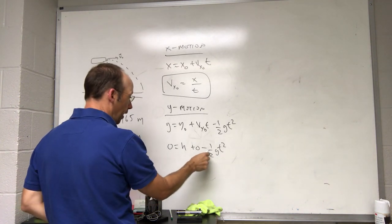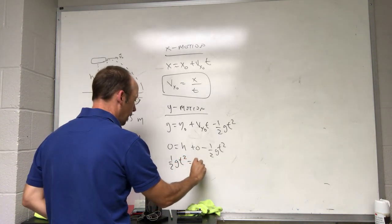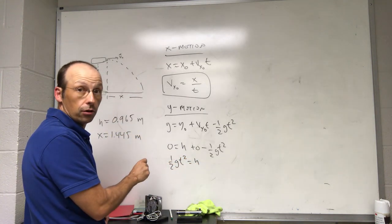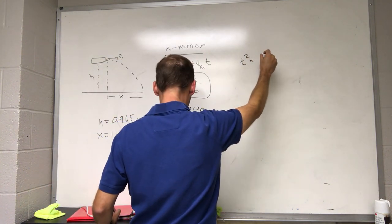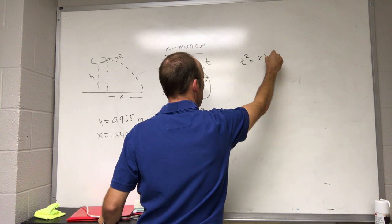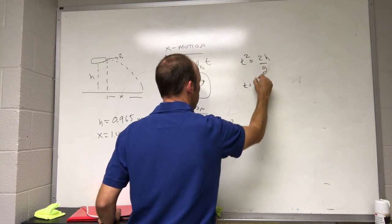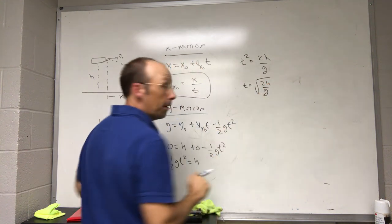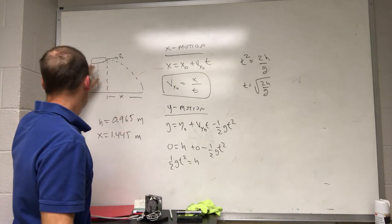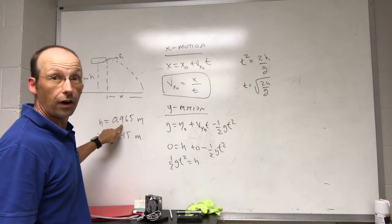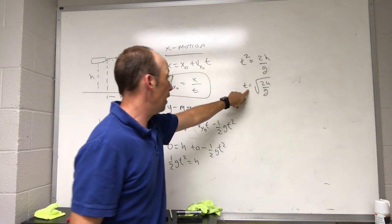So, if I add this to both sides, I get 1 half g t squared equals h, multiply both sides by 2, divide both sides by g, I get t squared equals 2h over g. Take the square root, t equals the square root of 2h over g. And remember, I know g is 9.8, I know h is, I measured it, it's 0.965 meters, and x is 1.44.